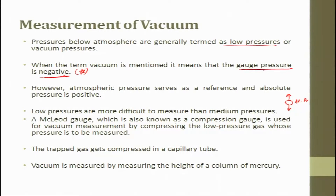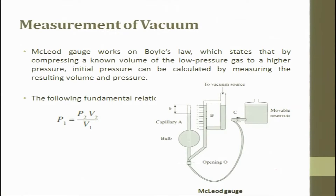The Megalode gauge, which is also known as a compression gauge, is used for vacuum measurement by compressing the low pressure gas whose pressure is to be measured. The trapped gas gets compressed in a capillary tube, and the vacuum is measured by measuring the height of the column of mercury. The setup has a bulb, a capillary which is attached, and a vacuum source which is attached.